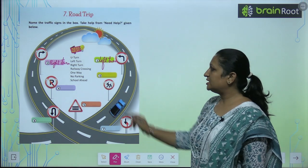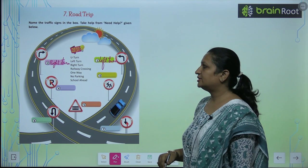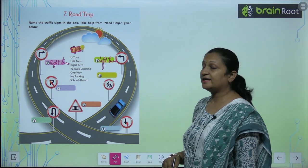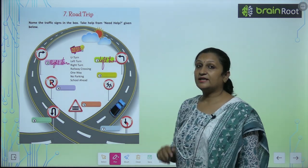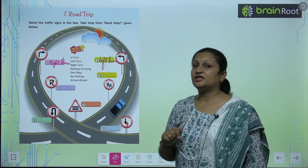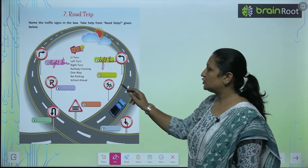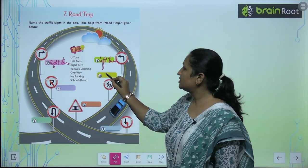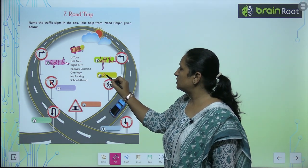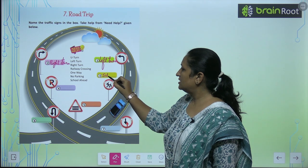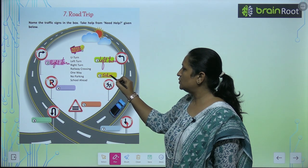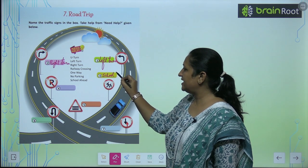The third one. Third one kya kehra hai? Third one hamai batara hai ki hamai dheere jalna chahiye, aange school hai. So you will write school ahead.